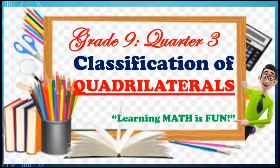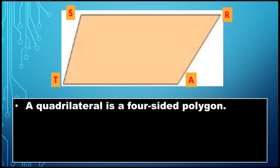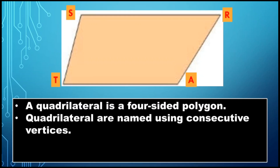Classification of quadrilaterals. We have here an illustration of a quadrilateral. A quadrilateral is a four-sided polygon. Quadrilaterals are named using consecutive vertices, and it follows a particular direction — either clockwise or counterclockwise direction.